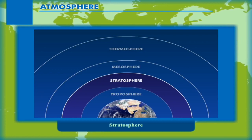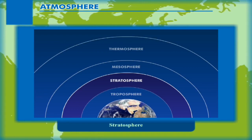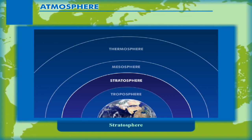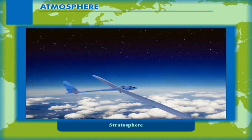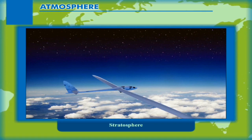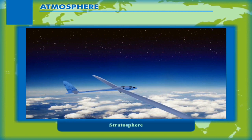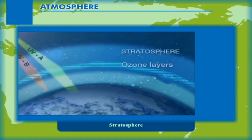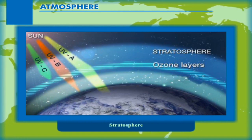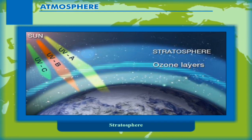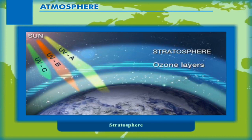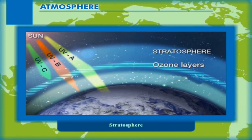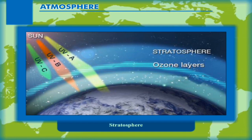Stratosphere: It lies above the troposphere and extends to about 50 km above the earth's surface. There is a gradual increase of temperature in this layer. This is the layer where air travel is safest because there are no bumpy pockets of air; therefore, aircraft usually fly in this space. It also has a band of ozone gas which protects us from the sun's ultraviolet rays. This is called the ozone layer, which is quite warm due to absorption of these rays. The upper limit of this layer is called the stratopause.